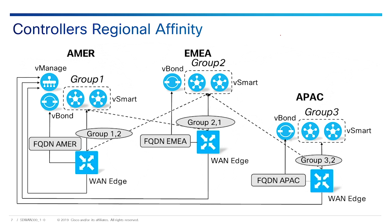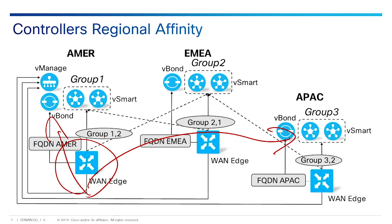In larger networks, you might want to restrict the vSmart controllers that a vEdge should connect to. Having a vEdge in America connecting to something in Asia Pacific is inefficient. This slide shows a global network with one global vManage and three regional data centers containing vBond and vSmart controllers for each region. Load balancing between the vBond orchestrators is done via DNS, so a vEdge in the American region will be directed by DNS to the IP address of the regional vBond. Selection of vSmart controllers is done by configuring affinity.